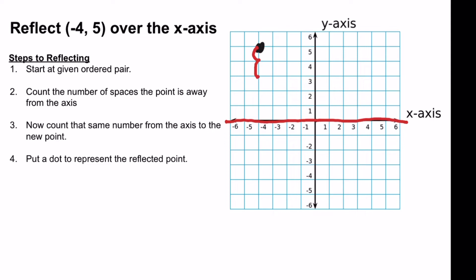So this is 1, 2, 3, 4, 5. So it's 5 spaces away. So I need to go 5 additional spaces on the other side of the x-axis.